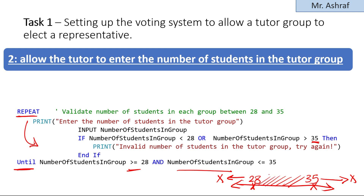Notice I used AND in the UNTIL condition because the valid value must be both greater than or equal to 28 and less than or equal to 35. In the IF condition I used OR because a value can be either less than 28 or greater than 35 — it cannot be both at the same time. For example, 29 is greater than 28 and at the same time less than 35.